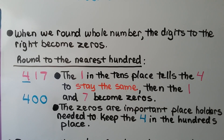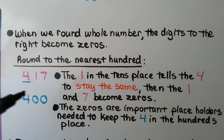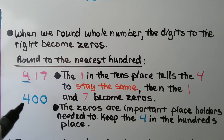When we round whole numbers, the digits to the right become zeros. We want to round to the nearest hundred. We have 417. The one in the tens place tells the four to stay the same. Then the one and the seven become zeros. And the zeros are important placeholders needed to keep the four in the hundreds place.